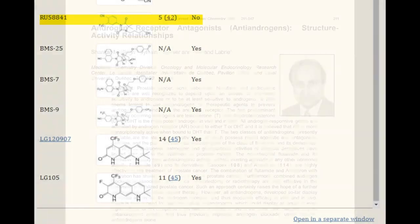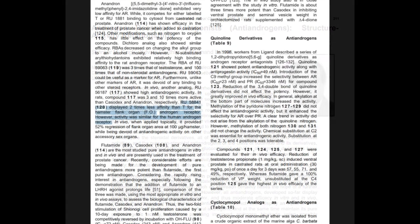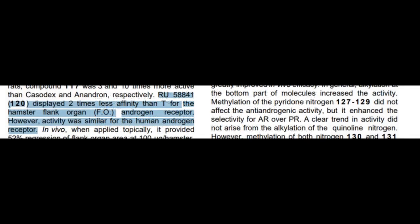In the context of RU58841's affinity to human androgen receptors, looking at the paper titled 'Androgen Receptor Antagonist Structure Activity Relationships' authored by Shankar M. Singh, we get the picture that RU58841 has a similar binding affinity to testosterone at the androgen receptor. The paper states that RU58841 displayed two times less affinity than testosterone for the hamster flank organ androgen receptor, however activity was similar for the human androgen receptor.